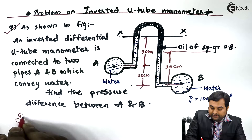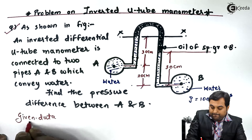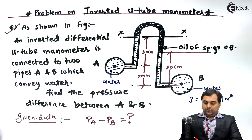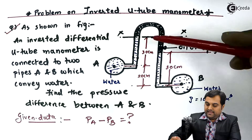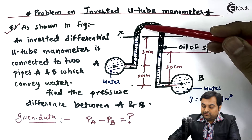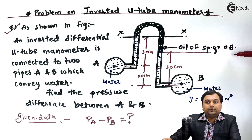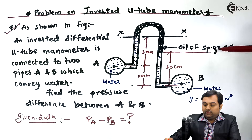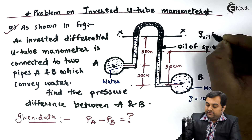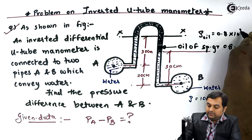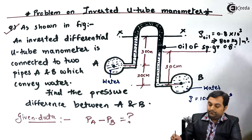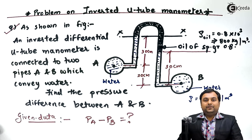We have to find out the pressure difference between pipelines A and B. Water is in both pipelines, so the density is 1000 kg/m³ for both. Another liquid, oil, is used in the manometer with specific gravity 0.8. Therefore, the density of oil is 0.8 × 1000 = 800 kg/m³.